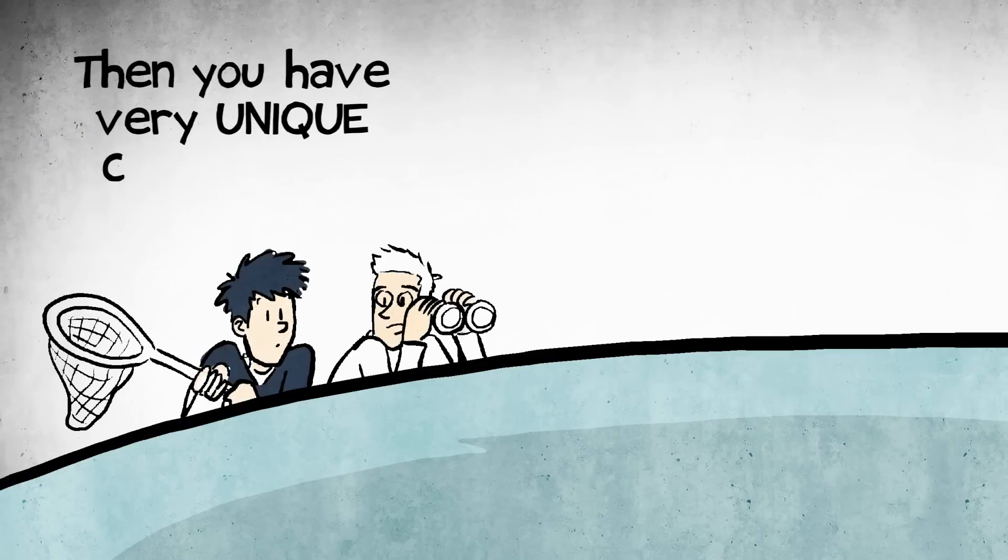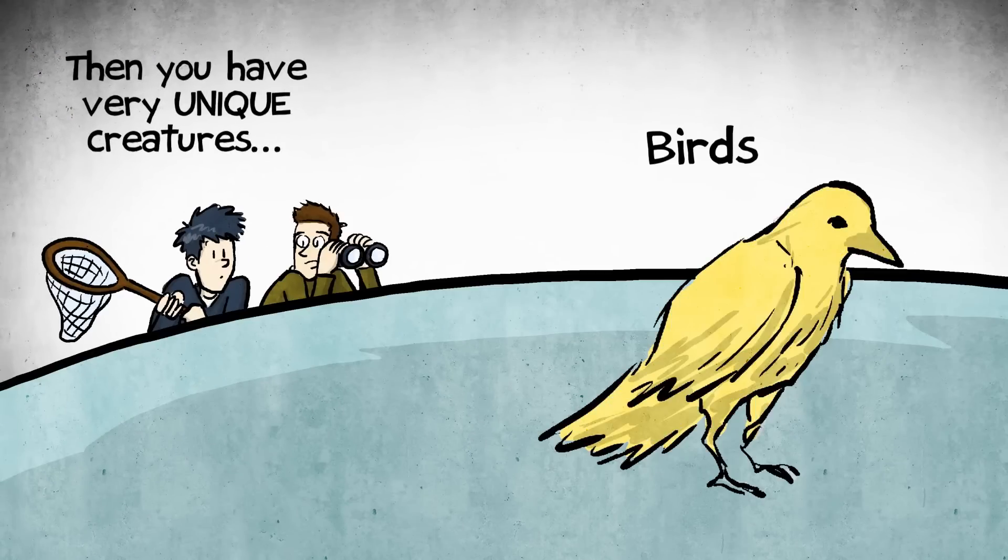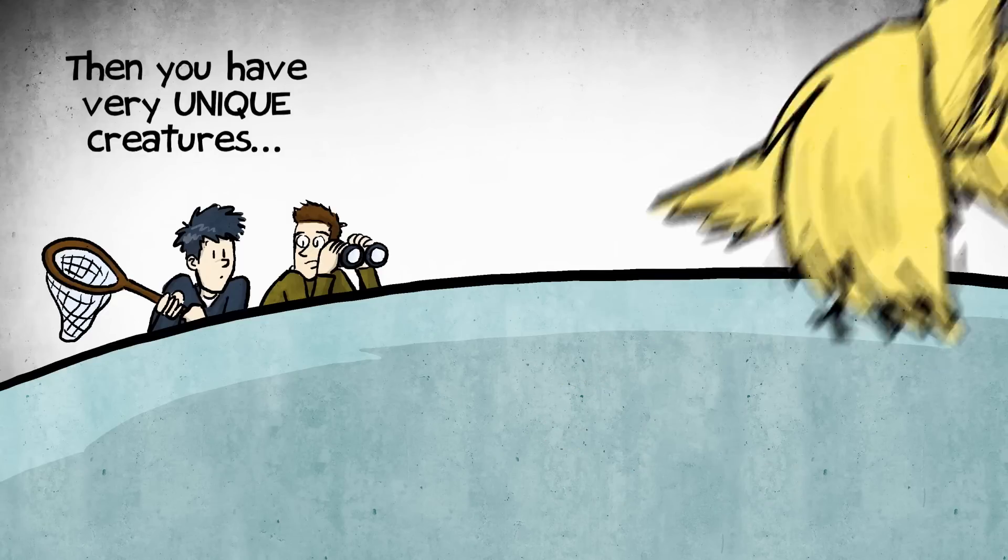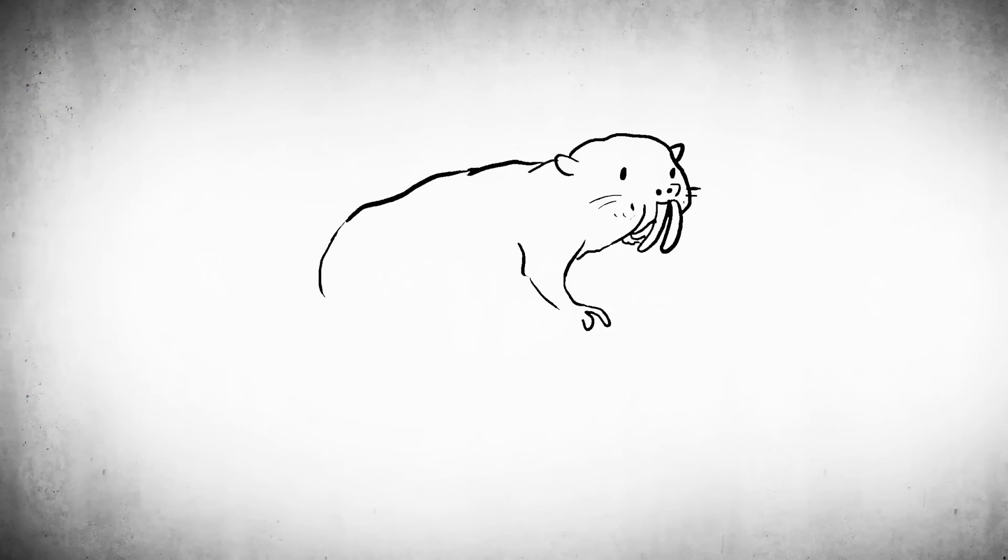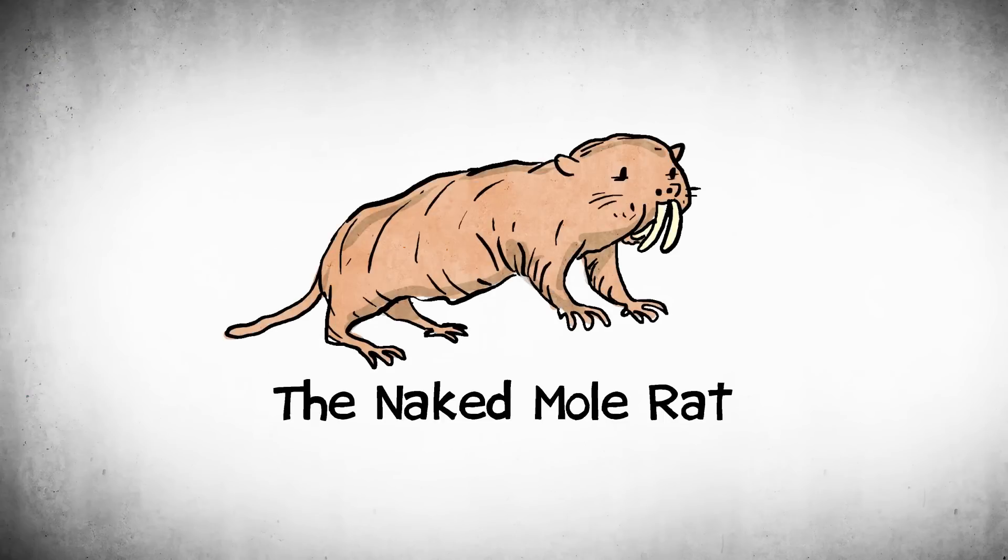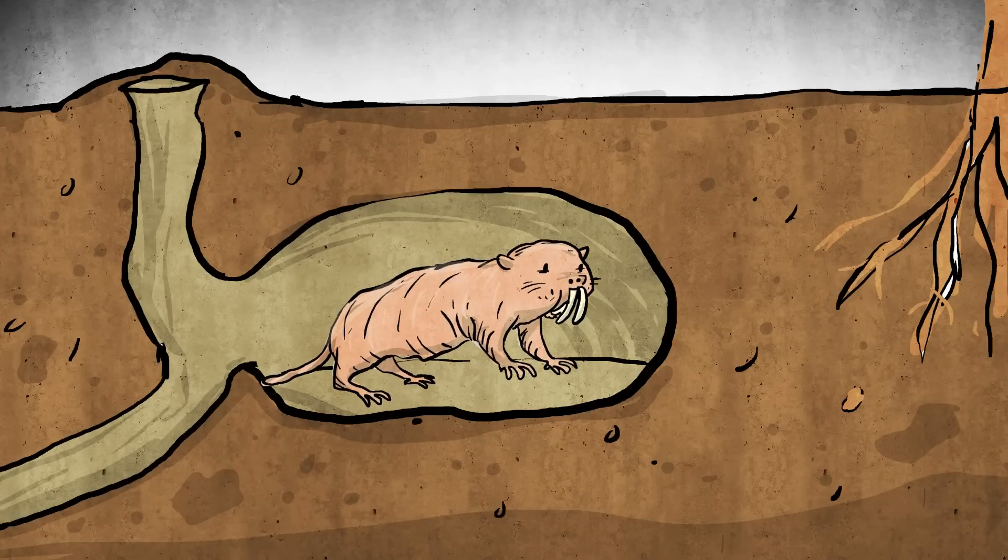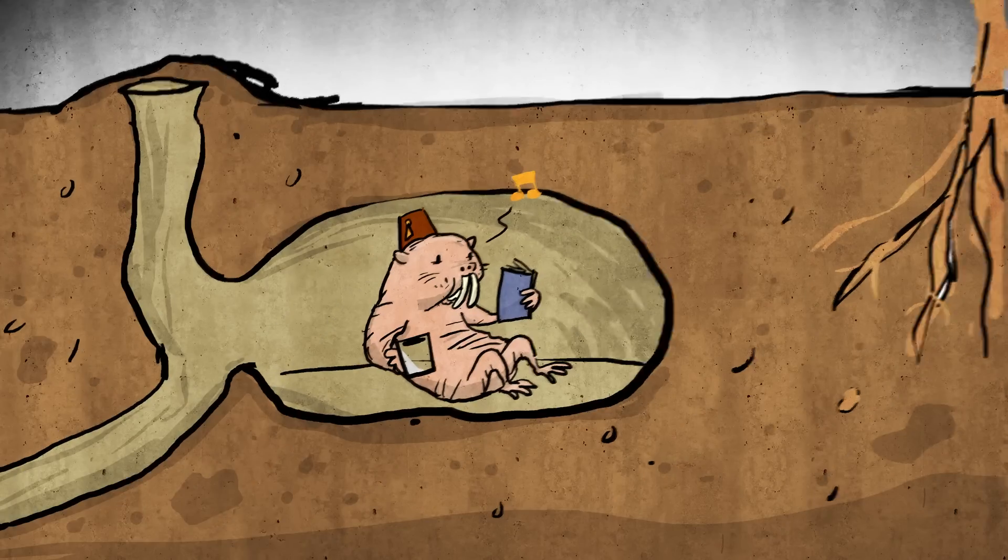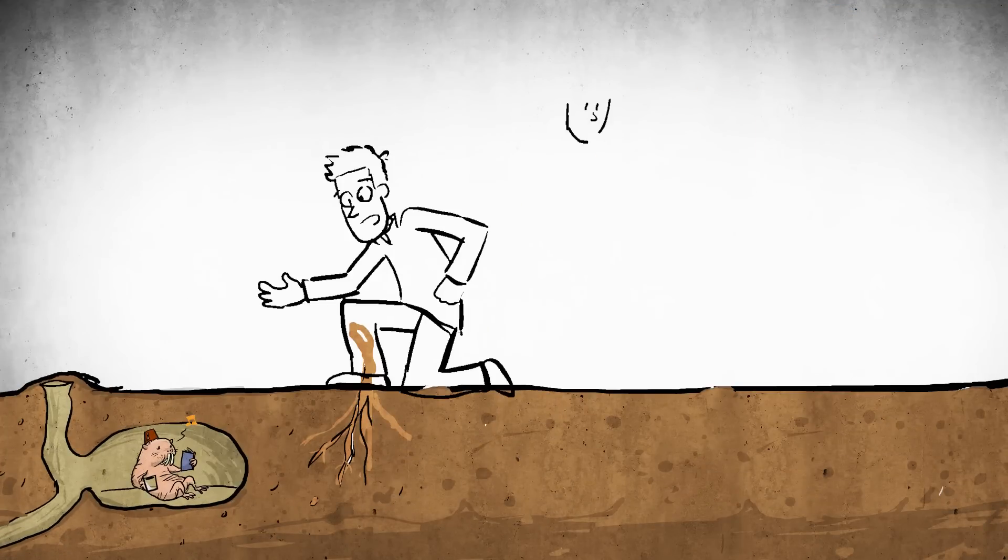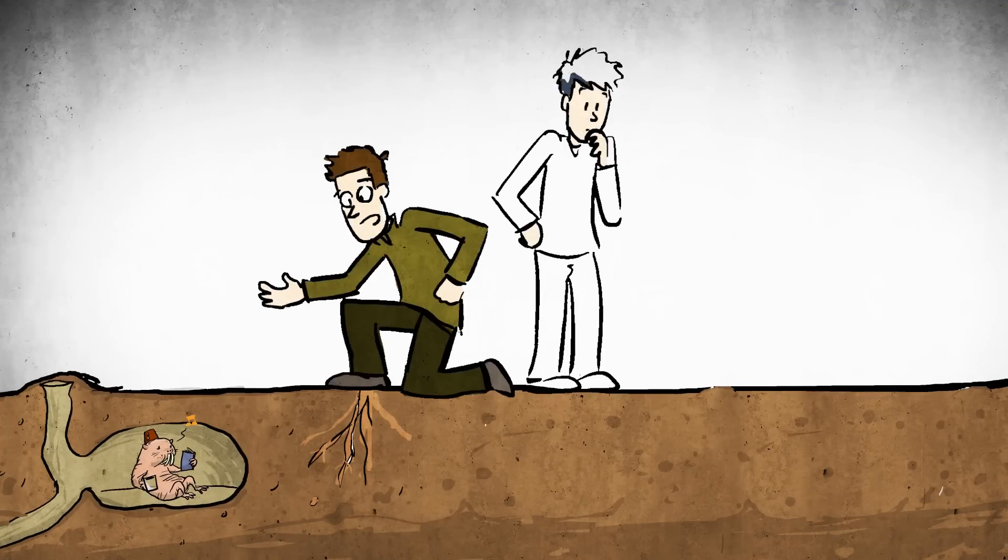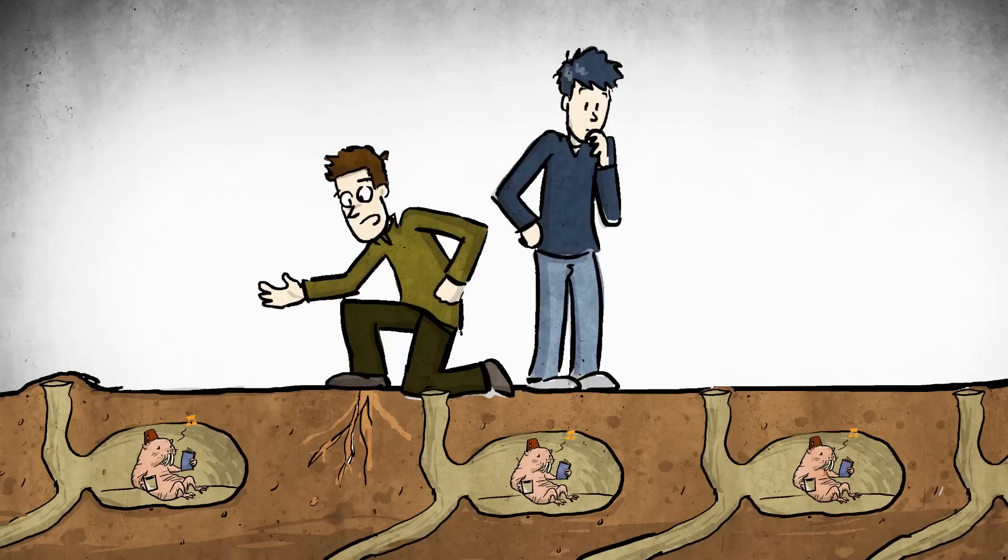But then you have very unique creatures. One example are birds. Birds actually live longer than would be expected for their body size because they can fly and avoid predators. One of the species that we're interested in is an organism called the naked mole rat, which lives over 30 years. Why? Because it lives in this protective environment. Then there is evolutionary pressure to live longer. One of the interesting things about the naked mole rat is that it's extremely cancer resistant. There's not been a single case of cancer in hundreds of naked mole rats.